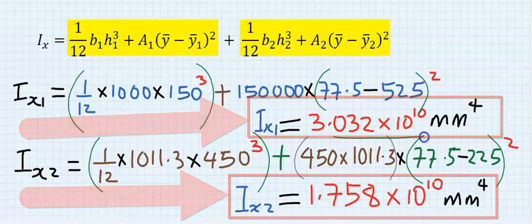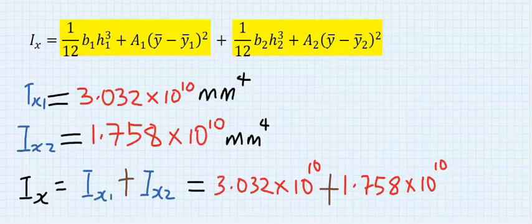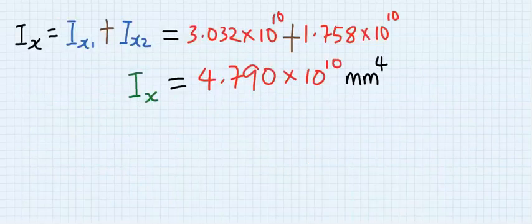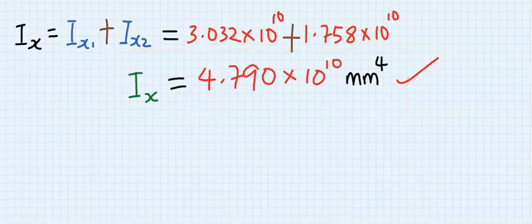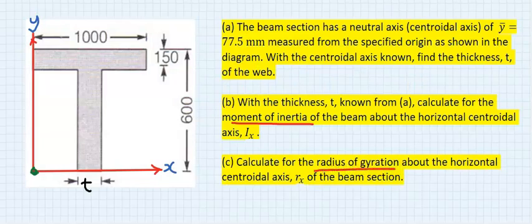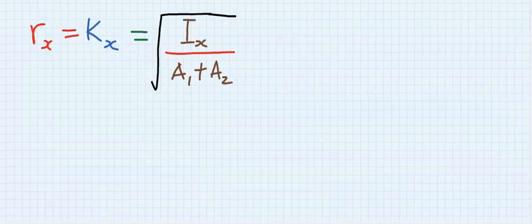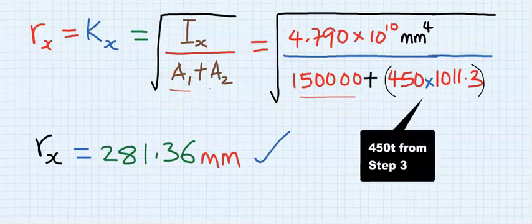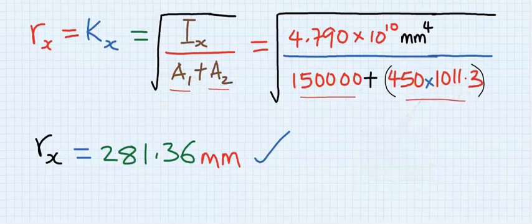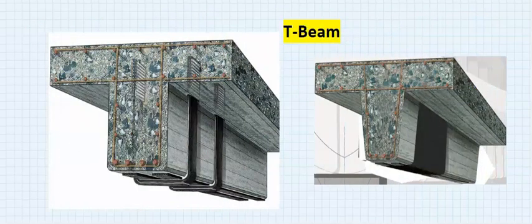When we add both moments of inertia together, we obtain the total area moment of inertia. Next, calculate the radius of gyration. Write out the formula, then substitute: this is the area of the first rectangle and this is the area of the second rectangle. Solving carefully gives us the radius of gyration. I hope these examples have been helpful — I will see you in the next video.